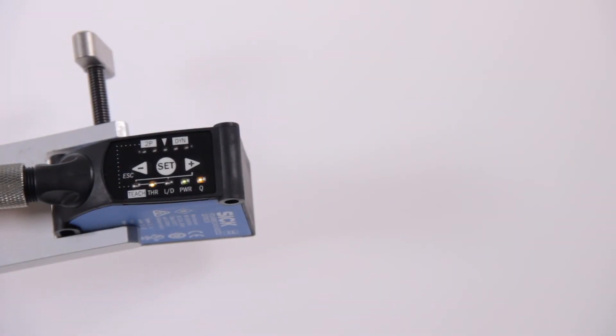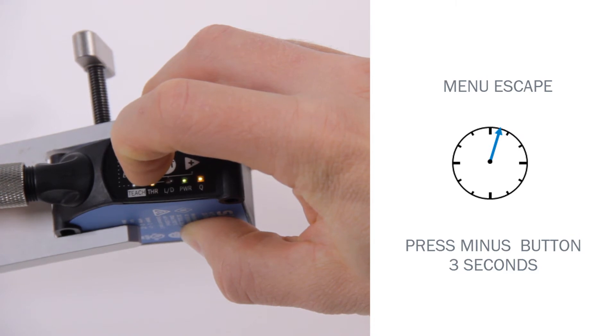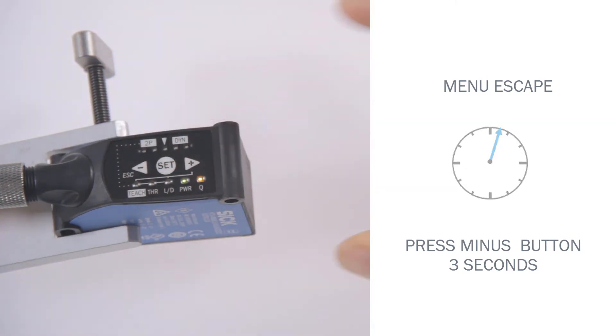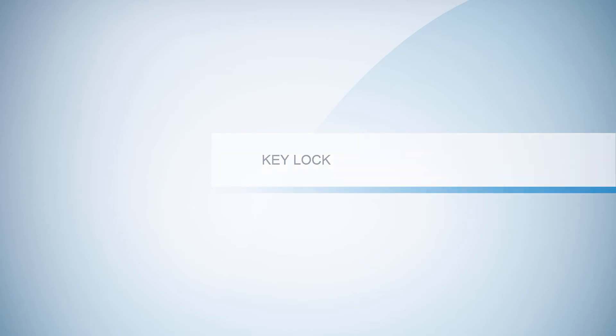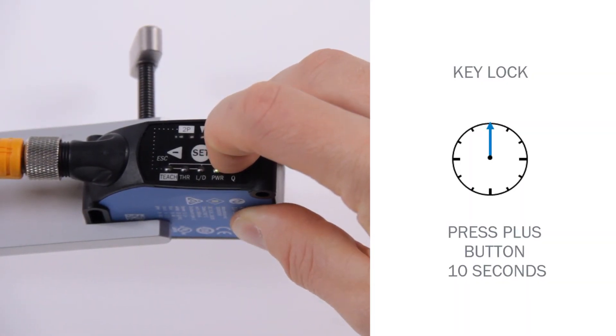Escape. For leaving the current menu item press the minus button for longer than 3 seconds. Key lock. The key lock can be activated and deactivated by pressing the plus button for longer than 10 seconds.